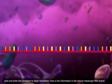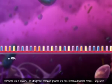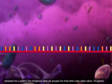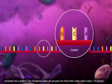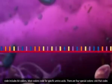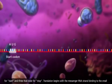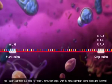How is the information in the mature messenger RNA strand translated into a protein? The nitrogenous bases are grouped into three-letter codes called codons. The genetic code includes 64 codons. Most codons code for specific amino acids. There are four special codons: one that codes for start and three that code for stop.